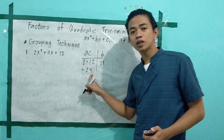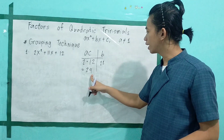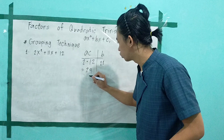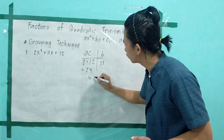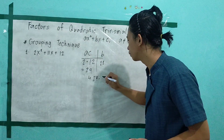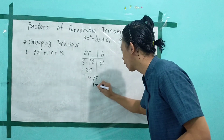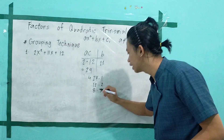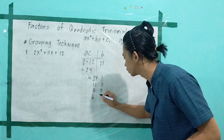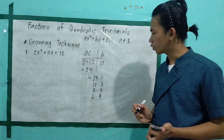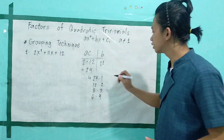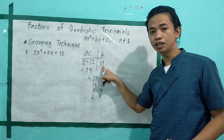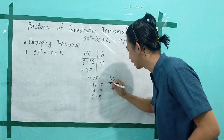Next, factor 24 such that the sum of the factors is equal to 11. So the factor pairs of 24 are: 24 times 1, or 12 times 2, or 8 times 3, or 6 times 4. Take their sums: 24 plus 1 is 25 — not the same as b. 12 plus 2 is 14 — not the same.